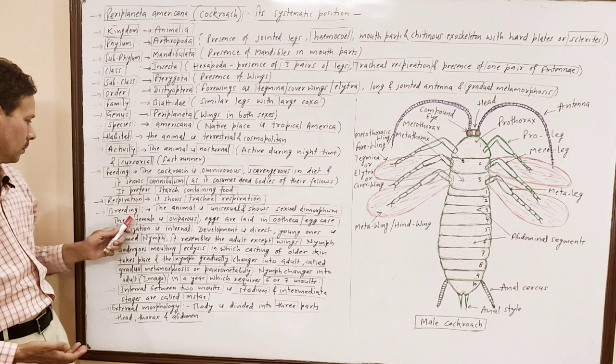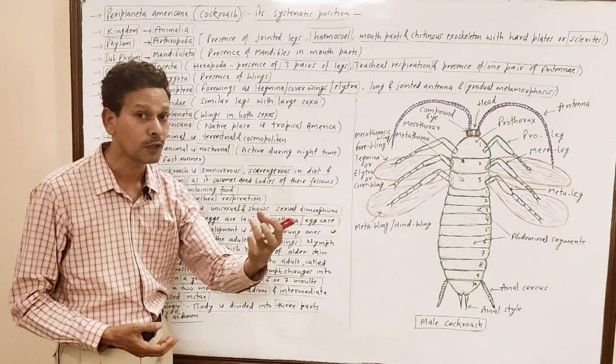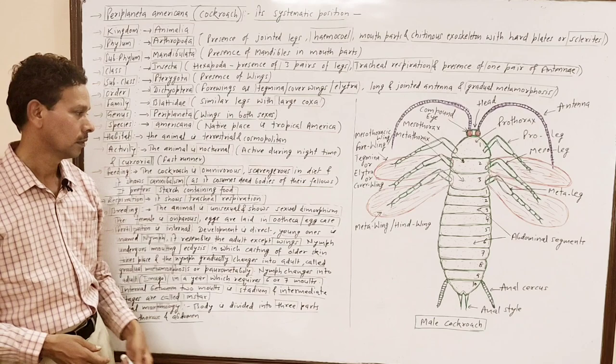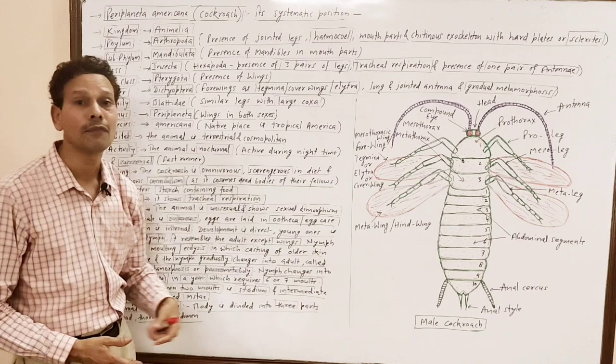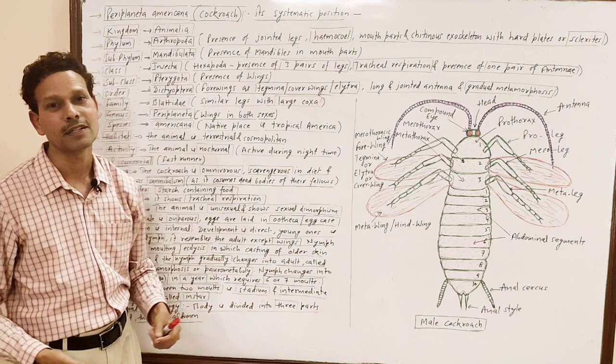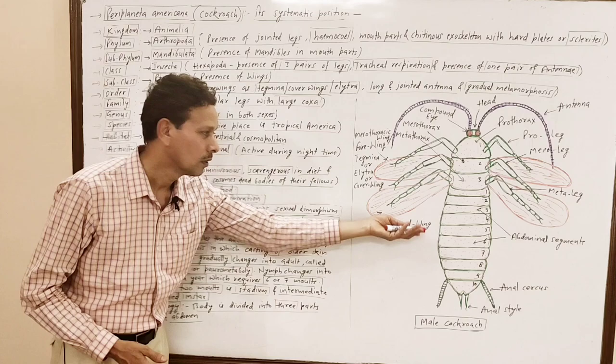The female is oviparous — she lays eggs, and the eggs are packed in a special type of egg case called ootheca or cocoon. The animal shows internal fertilization — cross-fertilization — and the fertilized eggs are packed in the egg case. The development is direct, meaning in the life history of cockroach, like earthworm, there are no larval stages.